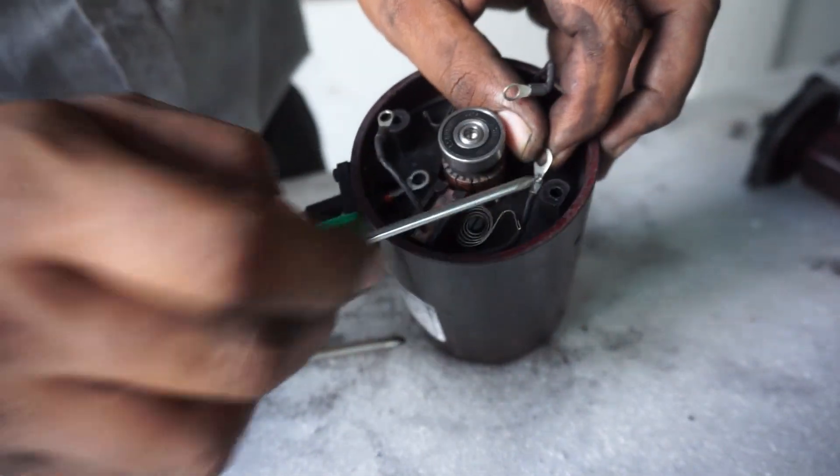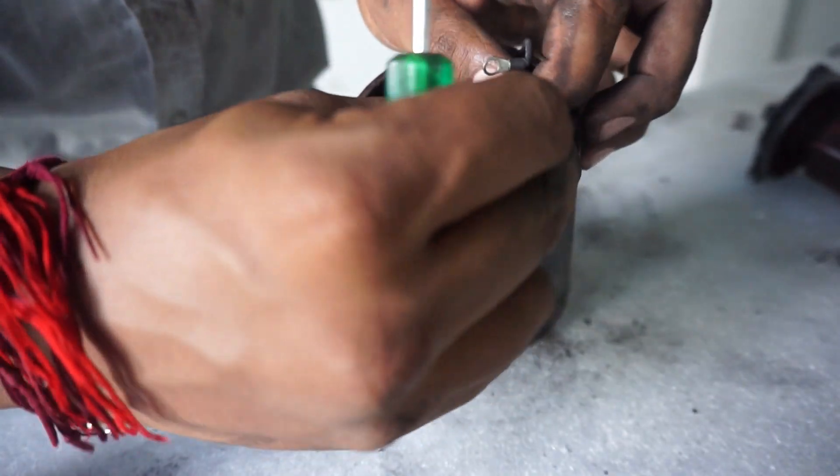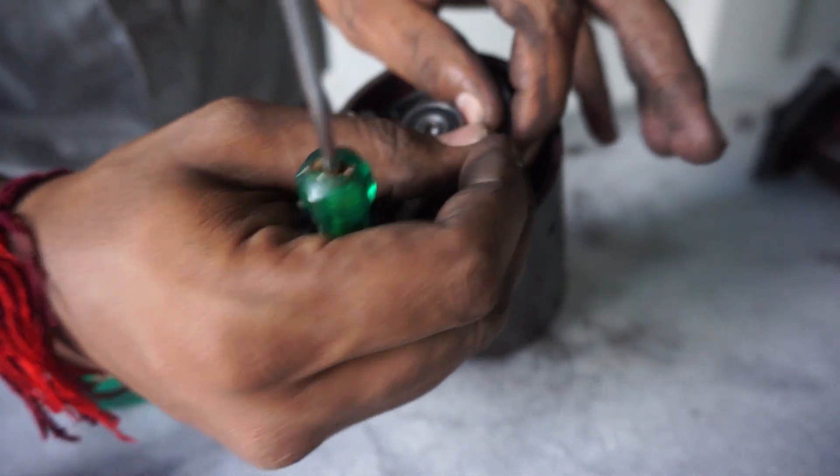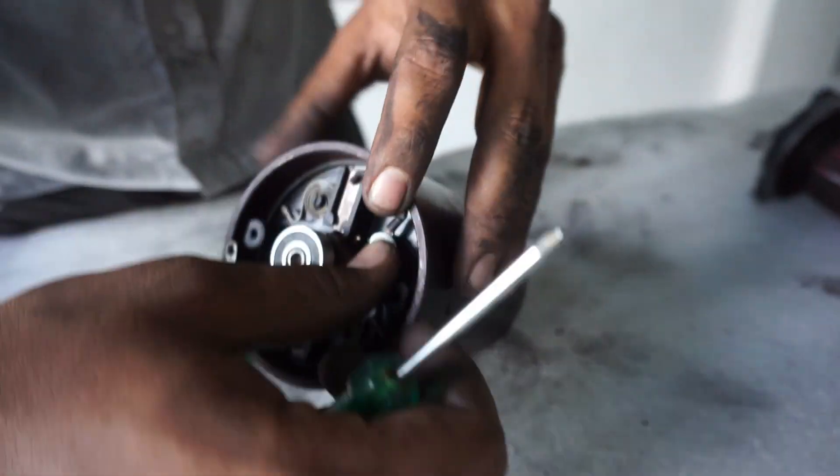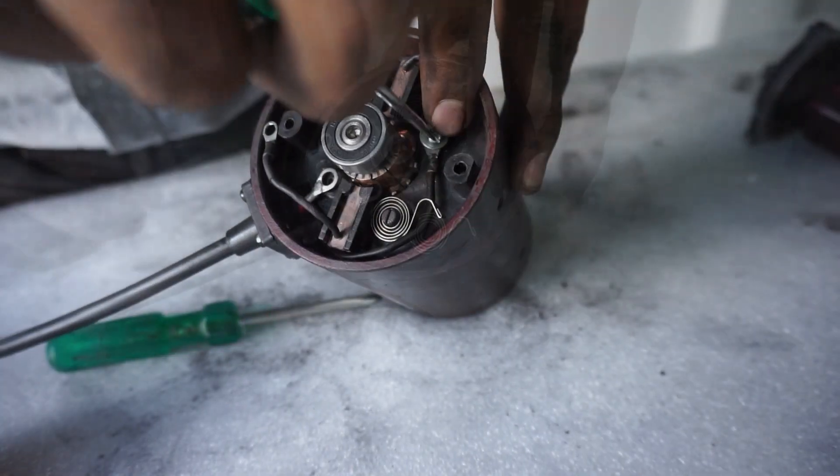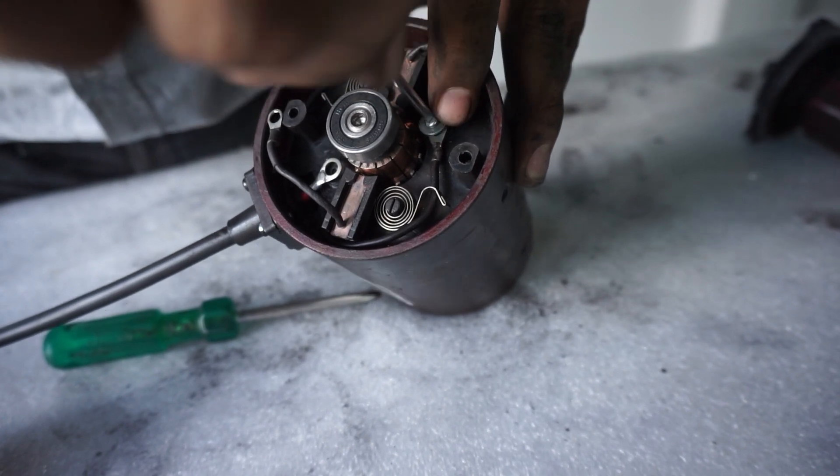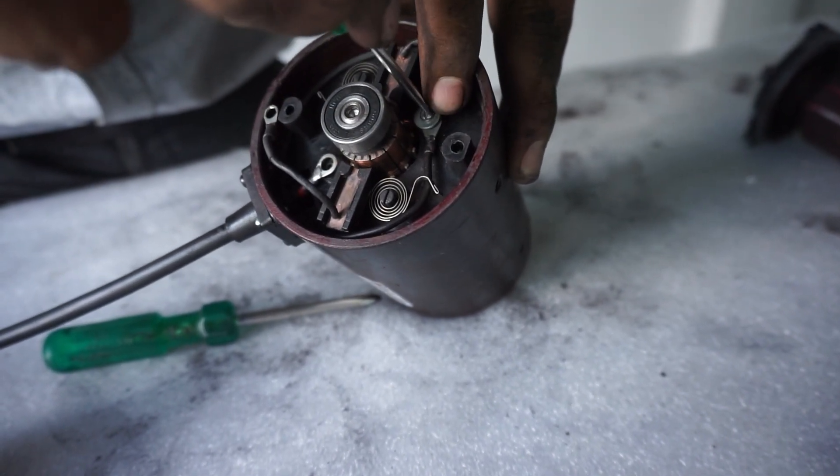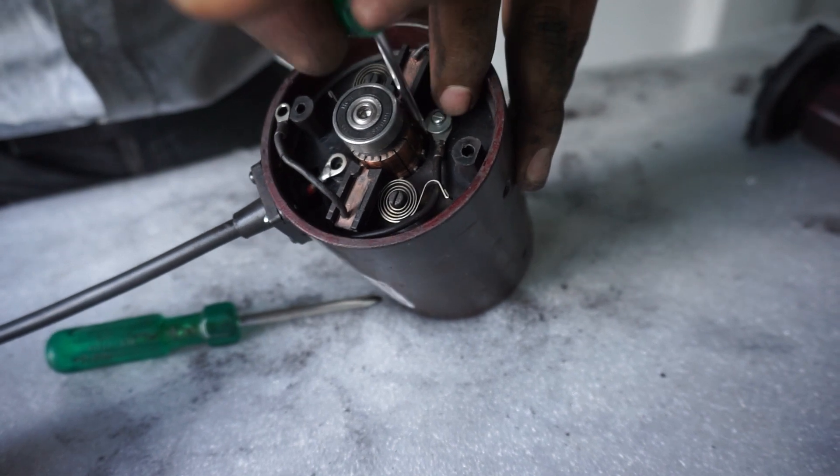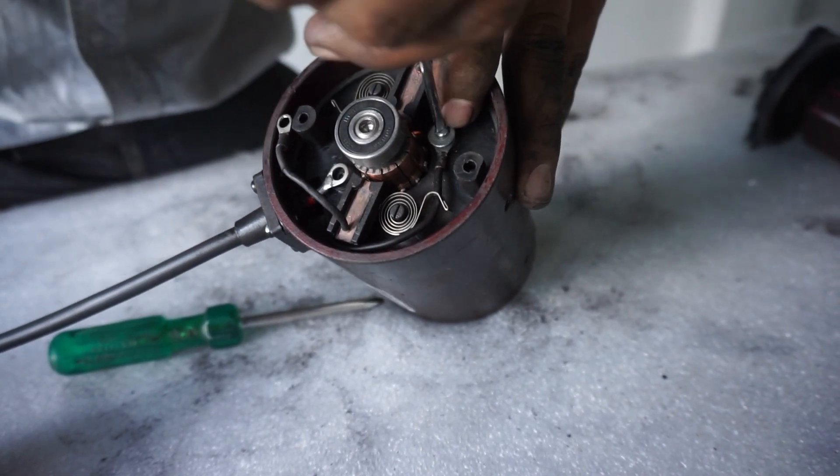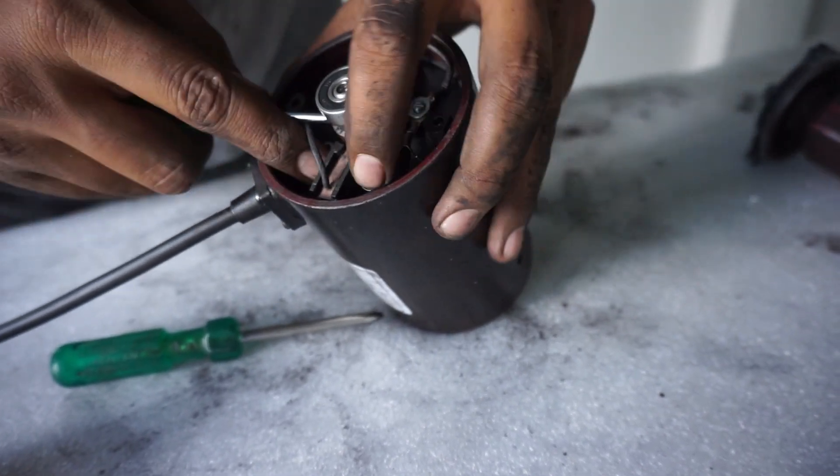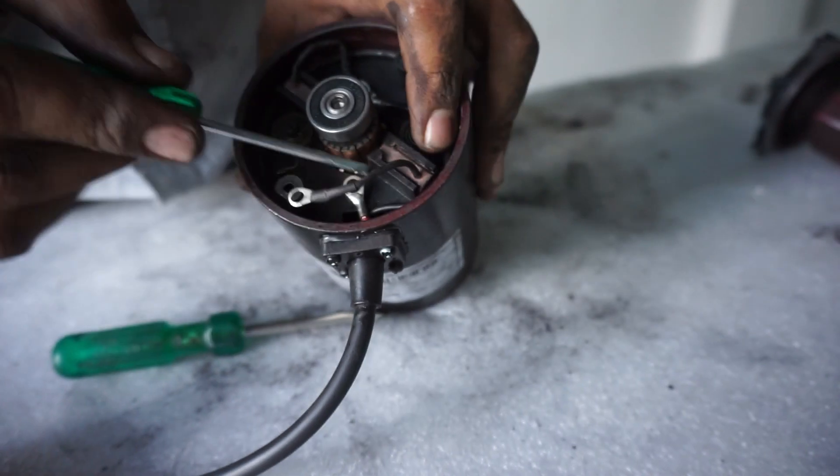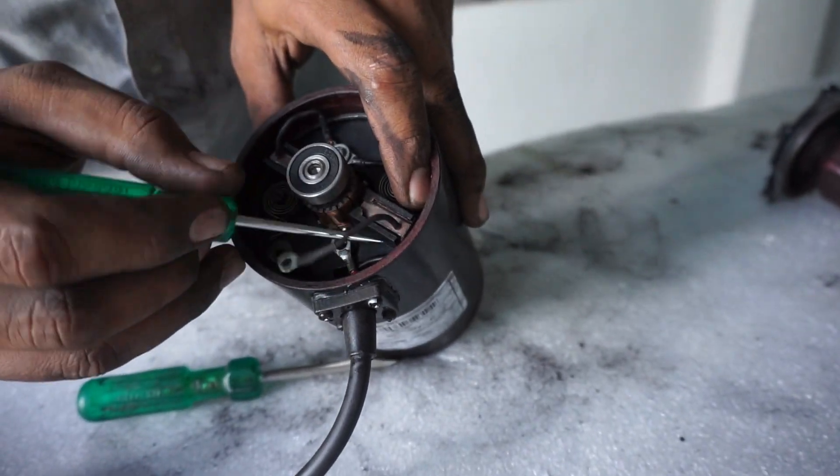First, the negative wire, then the brush wire, followed by the washer and screw. Tighten the screw to the brush holder plate. Repeat the same for the positive wire.